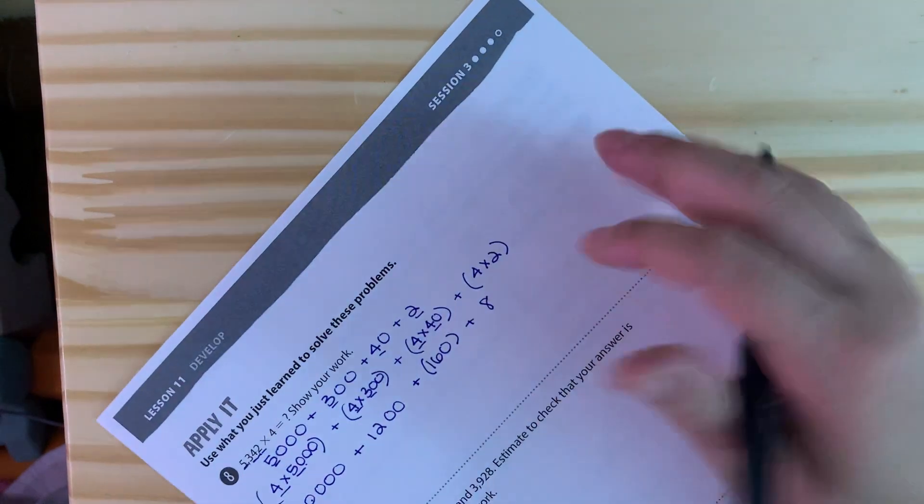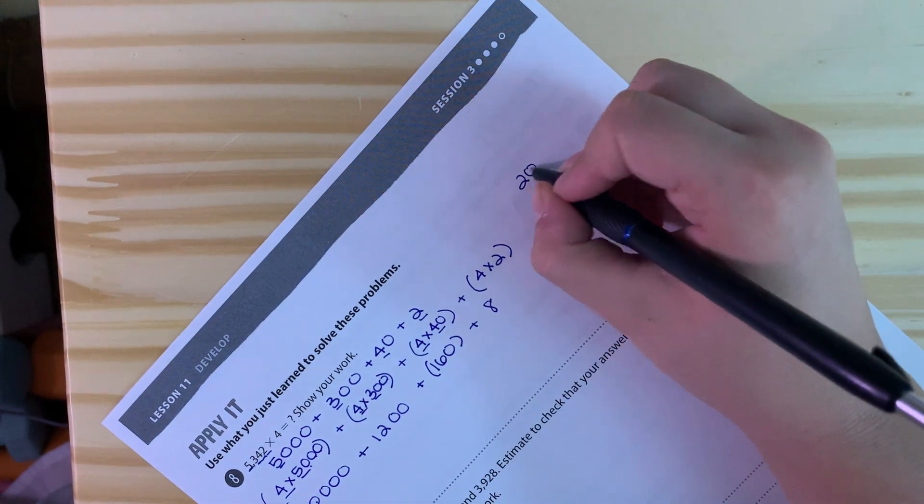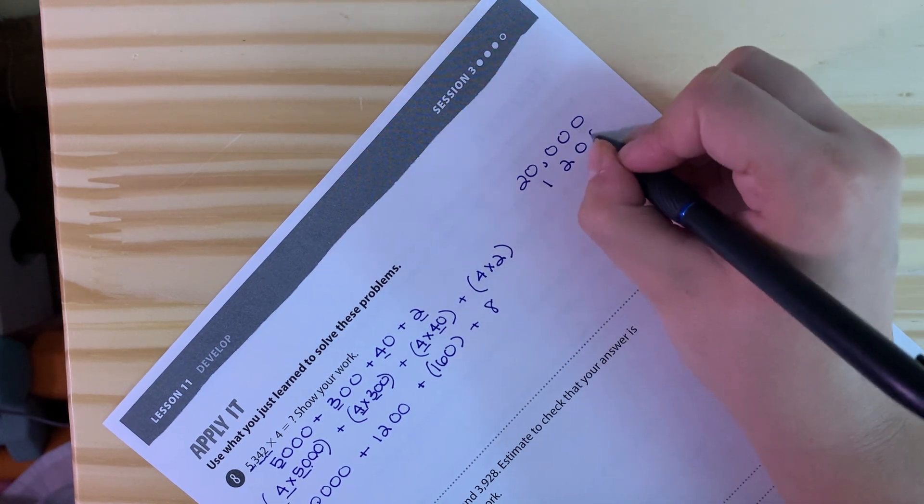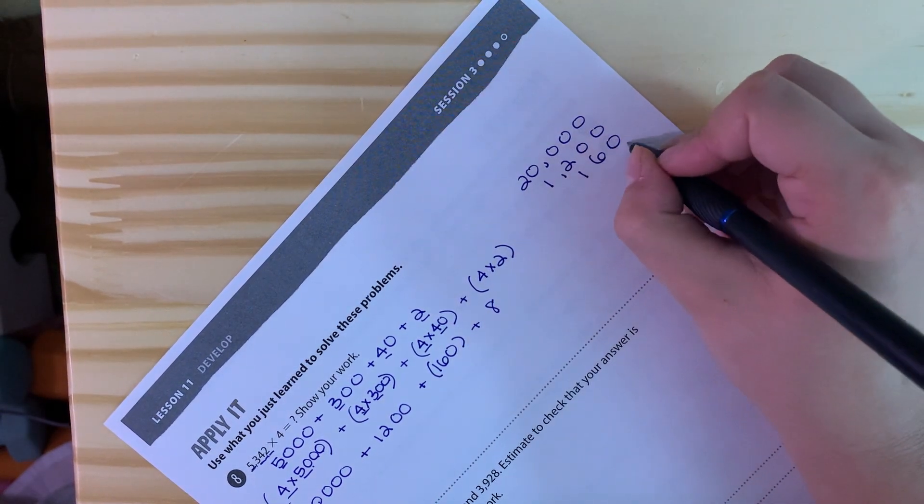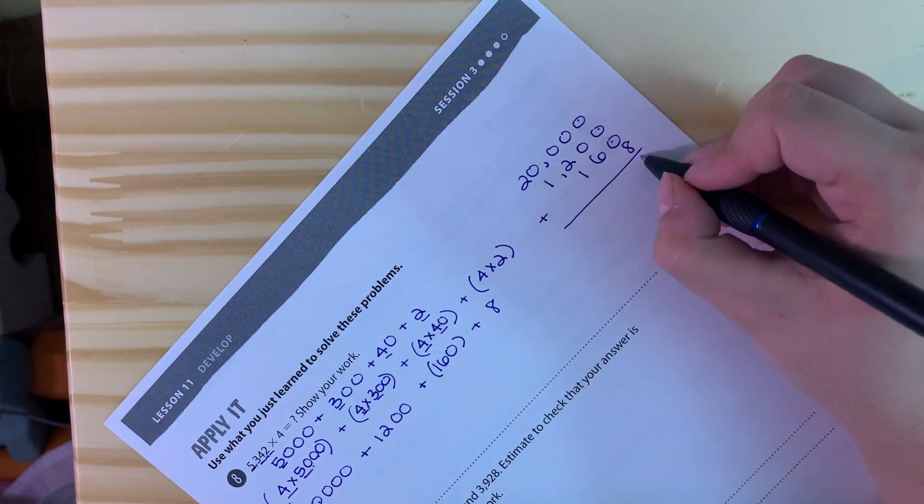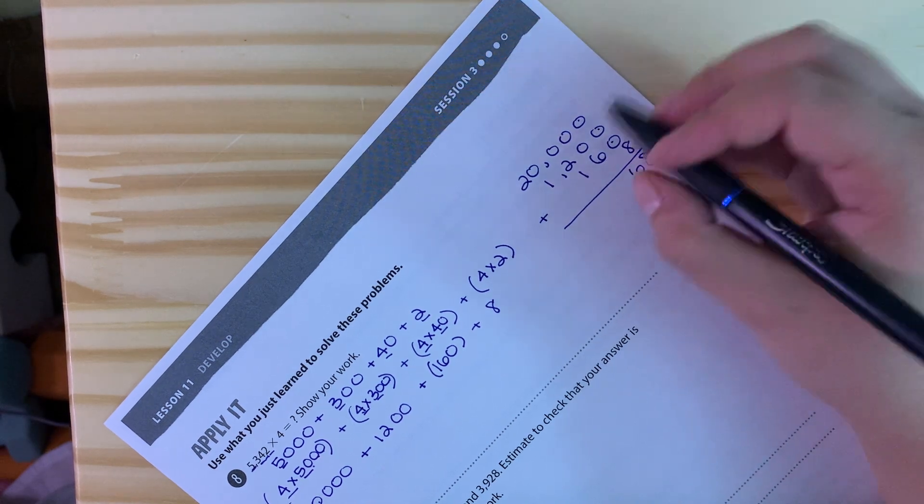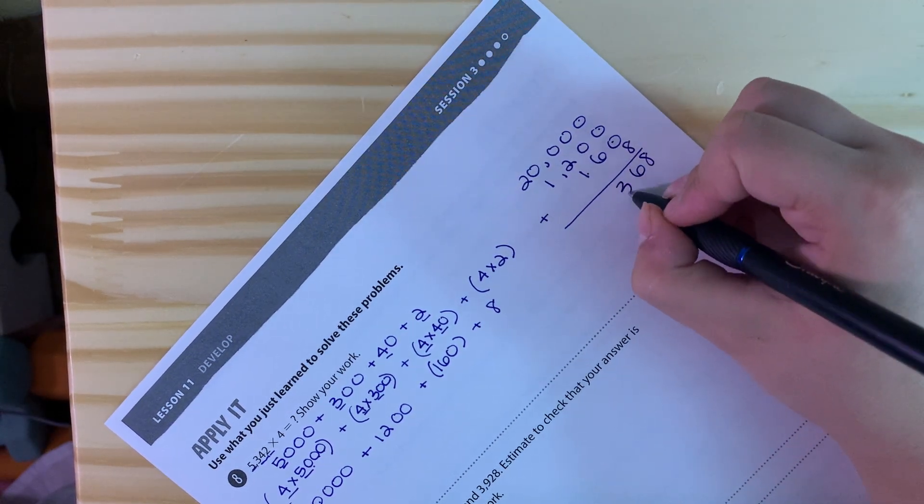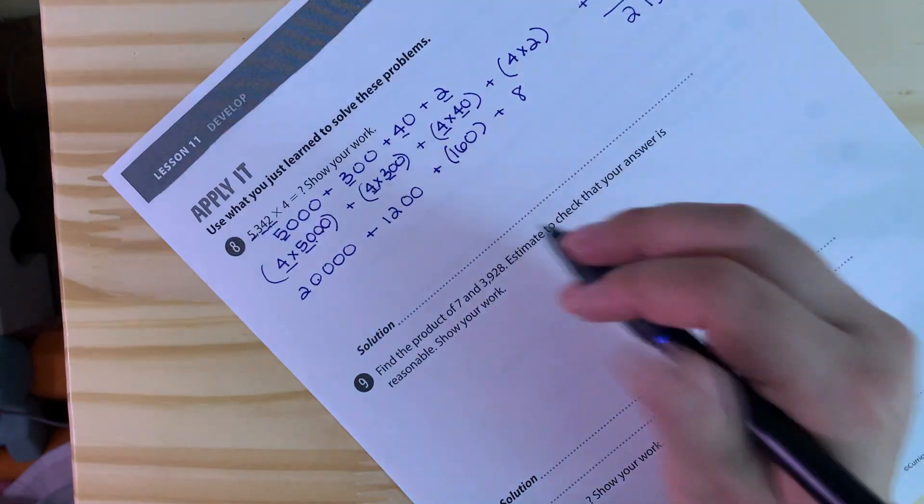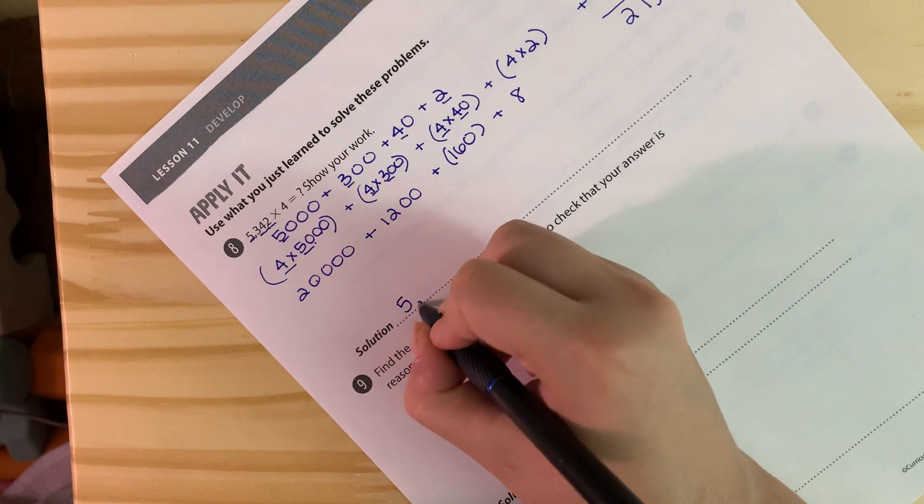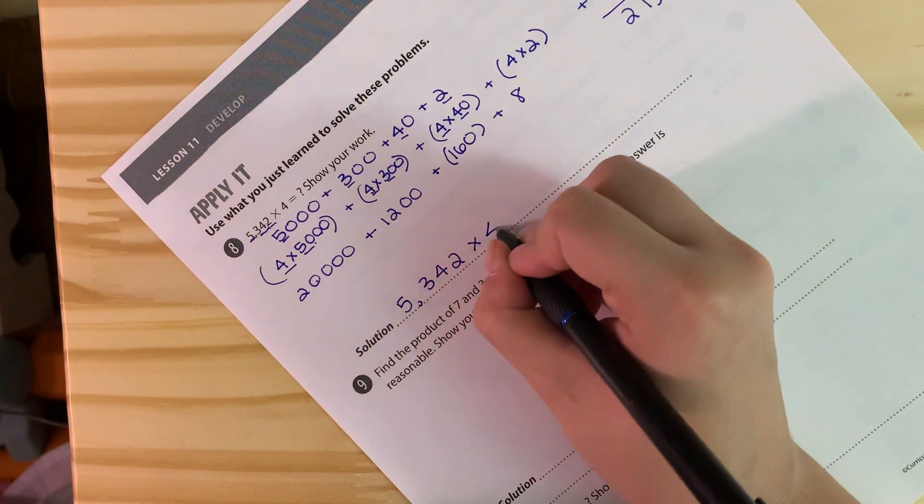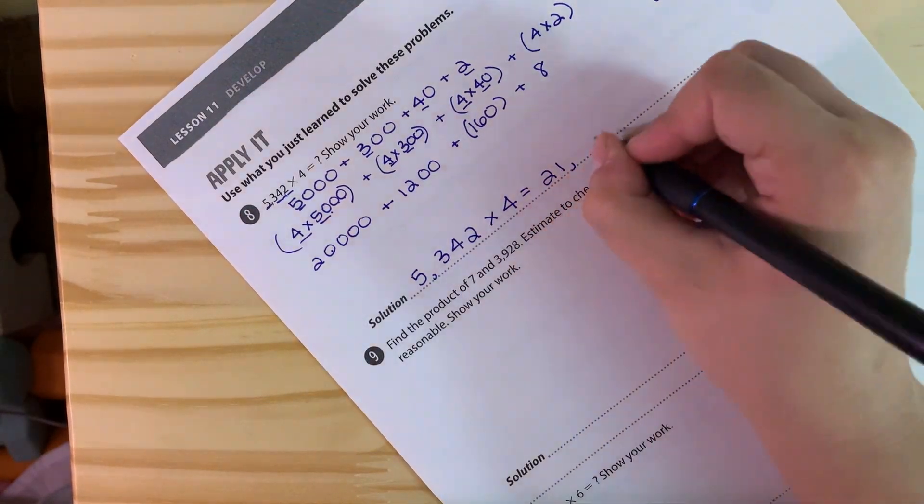So then you would just add them together: 20,000 plus 1,200 plus 160 plus 8. I'm just going to line them up on the side of my paper to show my work for this. So I have zero plus zero plus zero plus 8, so 8. Six plus nothing is 6, two plus one is 3, one plus nothing is 1, two plus nothing is 2. So we can say 5,342 times 4 is equal to 21,368.